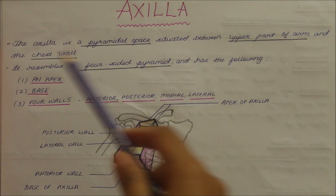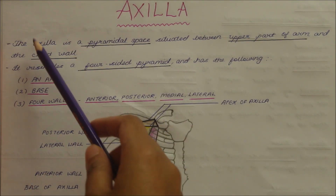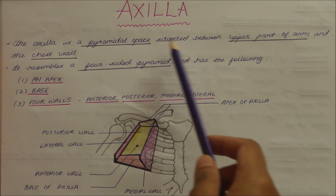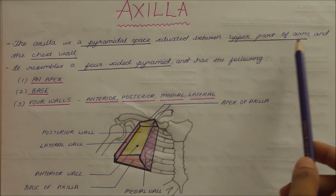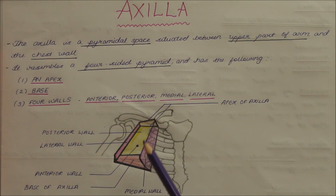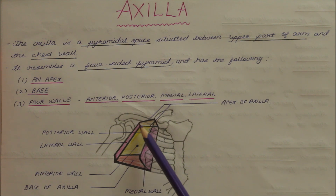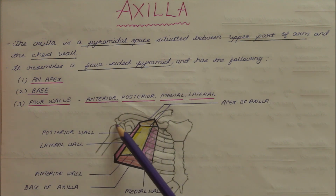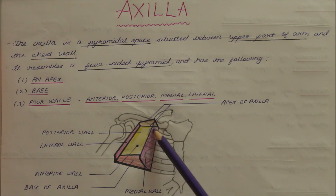Hello guys and welcome back to my channel. In this video we will be learning about the axilla. The axilla is a pyramidal space situated between the upper part of the arm and the chest wall.